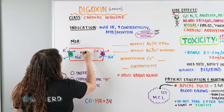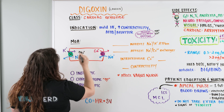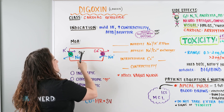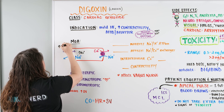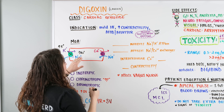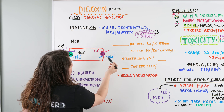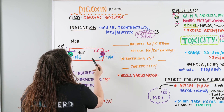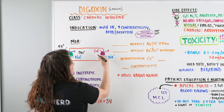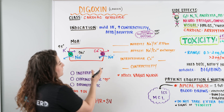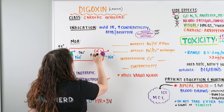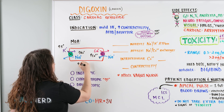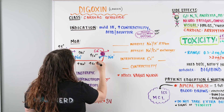When Digoxin slows down the Na/K ATPase, sodium inside the cell is going to increase. Because of this, the sodium-calcium exchanger — which normally wants to bring sodium in since sodium was being pumped out — is not going to bring it in as often. If it's not bringing sodium in as often, calcium is not going out as often. We now have an increase of both intracellular sodium and intracellular calcium.